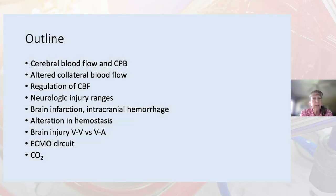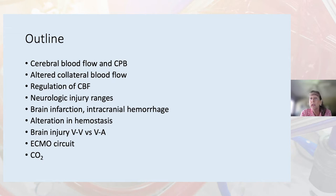This is a brief outline of what I'd like to cover in the next 20 minutes: cerebral blood flow and cardiopulmonary bypass, altered collateral blood flow, regulation of cerebral blood flow, neurologic injury, infarct and hemorrhage, alterations in hemostasis, brain injury in VV versus VA, the ECMO circuit itself, and of course, CO2.